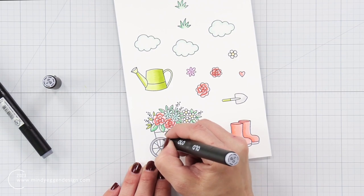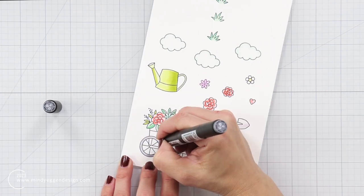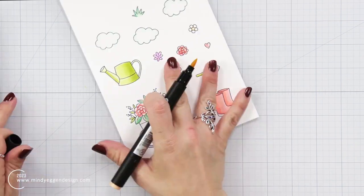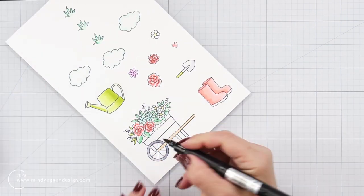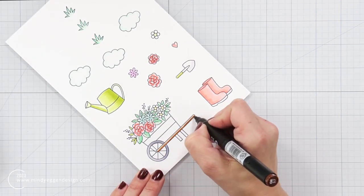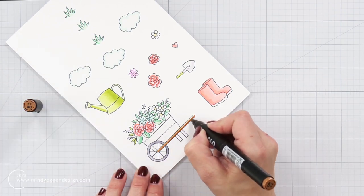And then for the tire on my wheelbarrow, that one's also going to be kind of a light gray, just a little bit darker than what I used on the shovel. I didn't want anything to be super dark and kind of stick out like a sore thumb. I wanted it to be fairly light.